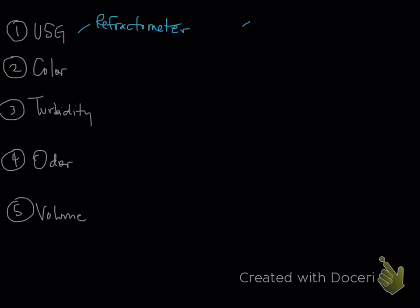A couple other terms: remember that 1.008 to 1.012 is isosthenuria, meaning that it's the same as the plasma specific gravity if you did it. Anything less than 1.008 is going to be hyposthenuria, and this is because it's less than the plasma specific gravity, and it's because the tubules are actively diluting the filtrate.